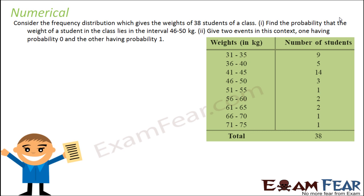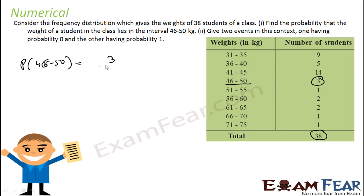Consider this frequency distribution which gives the weight of 38 students of a class. We have to find the probability that the weight of a student lies in the 45 to 60 range — there are 3 students in this range. So the probability of 46 to 60 is the number of students in this range, that is 3, by total number of students, that is 38. So you get approximately 0.079.